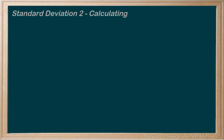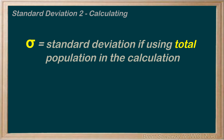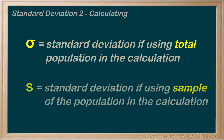In this tutorial, we'll learn how to calculate standard deviation for a set of data. When working with standard deviation, we are particular about whether the data for our calculations is from a total population or a sample of the population. The symbol for standard deviation is shown by either sigma, if the data includes the entire population, or s, if the data used includes a sample of the population.